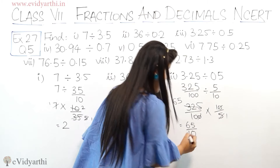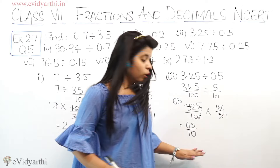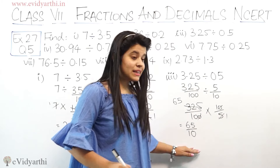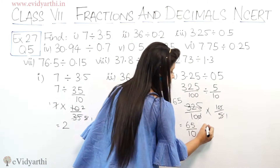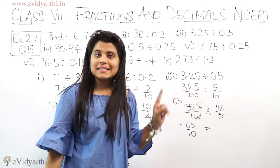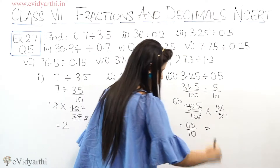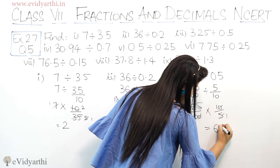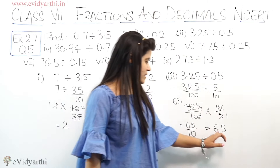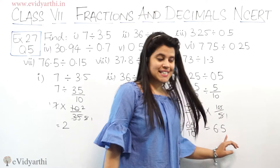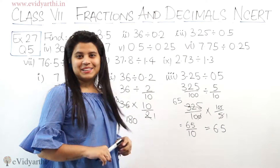अब नीचे मेरे पास 10 है. 10 means one zero — मतलब decimal के बाद एक digit होनी चाहिए. So I can write 65 upon 10 as 6.5. Because हमने decimal के बाद एक digit कर दिया. Fine. So now let's come to the next part.